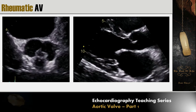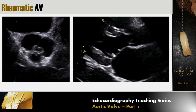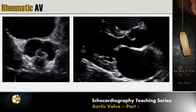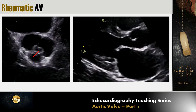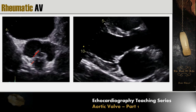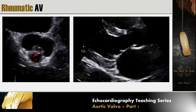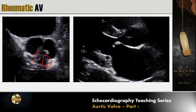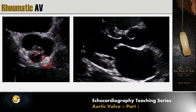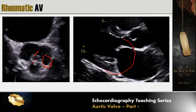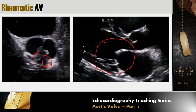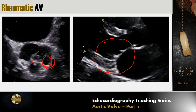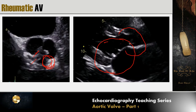In rheumatic degeneration of the aortic valve, we see thickening at the valve tips and commissures, with commissural fusion. Almost always, rheumatic involvement of the aortic valve is accompanied by rheumatic involvement of the mitral valve. Because of commissural fusion and restriction of opening, we can also see doming of the aortic valve in the long axis view.